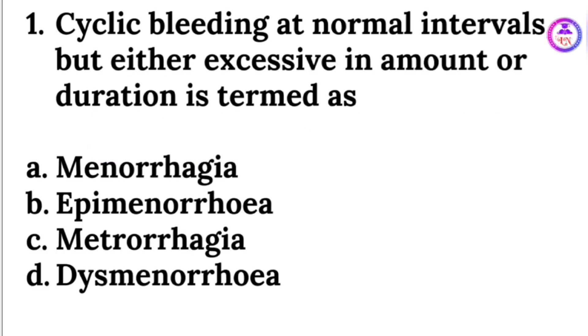The cyclic bleeding at a normal interval but either excessive in amount or duration is termed as? The answer is menorrhagia.